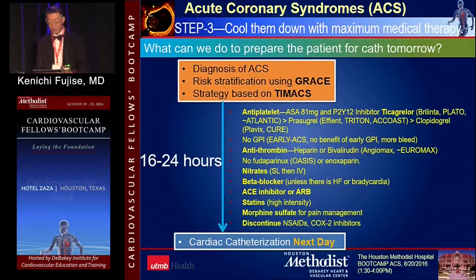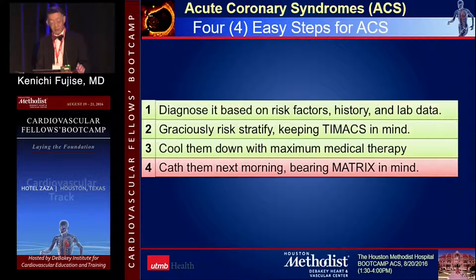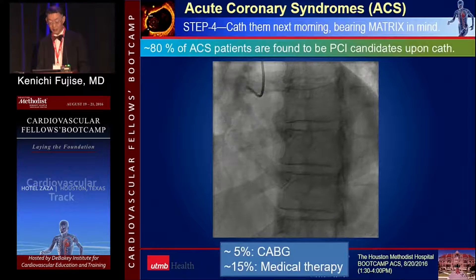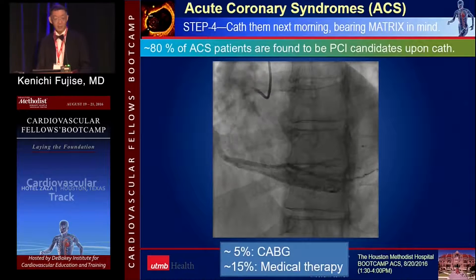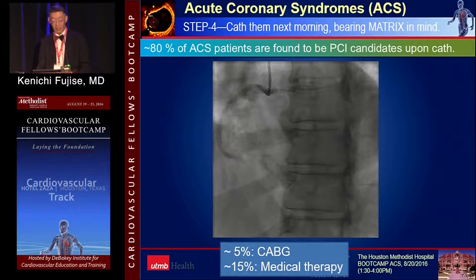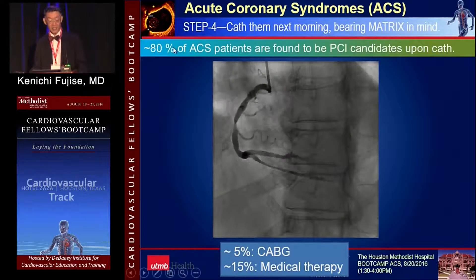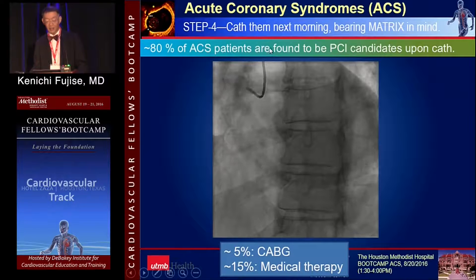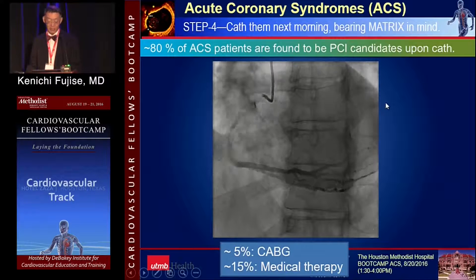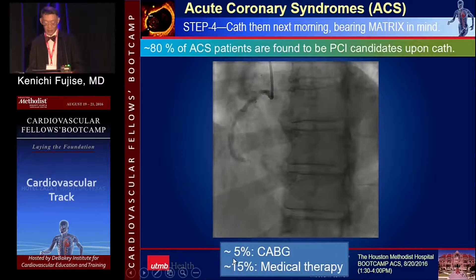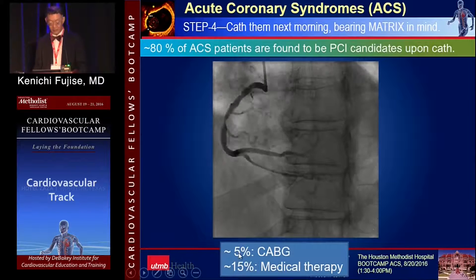Pain control with morphine and discontinue all non-steroidal anti-inflammatory drugs. Number four: cath them next morning, bearing MATRIX in mind. Mr. West was taken to the cath lab, and the patient has critical mid-RCA stenosis. Please note that 80% of ACS patients are good candidates for PCI upon cardiac catheterization; only 5% require CABG and 15% medical therapy.